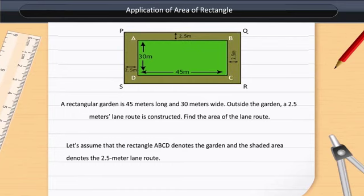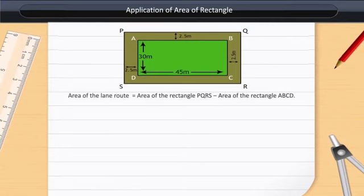To find the area of the lane route, we need to find the areas of both rectangles. Area of the lane route equals Area of Rectangle PQRS minus Area of Rectangle ABCD.